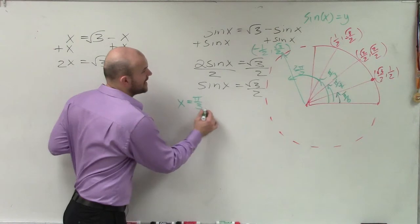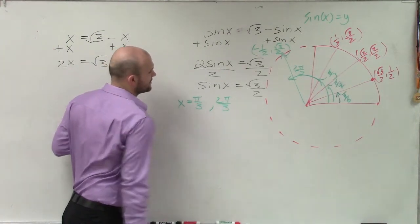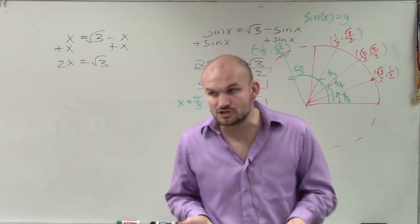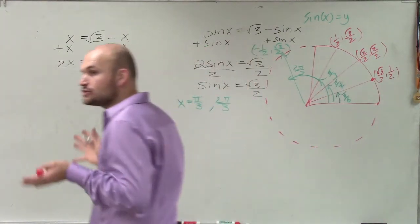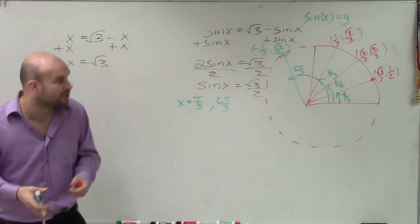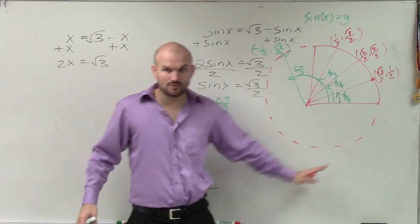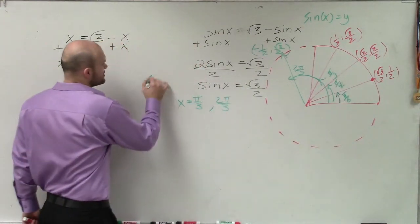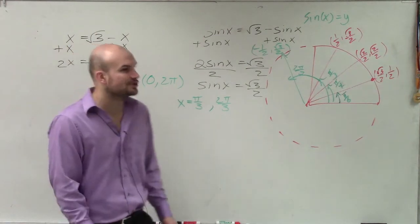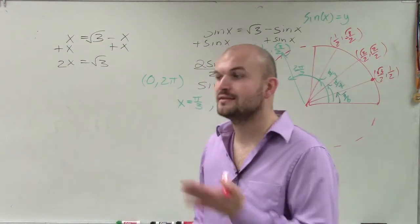So my angles are pi over 3 and 2 pi over 3. Now remember, that solution is only true when we have solutions between 0 and 2 pi. So if on a test I wrote 'give me the solutions between 0 and 2 pi,' which we call a constraint, that would be true.